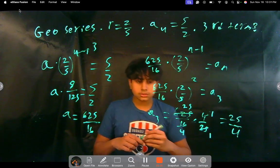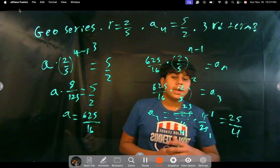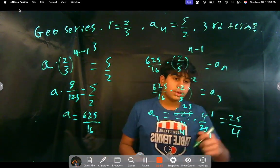All right, well, yeah, that's really it to the problem. We found our third term, a₃ is equal to 25 over 4. Thank you.